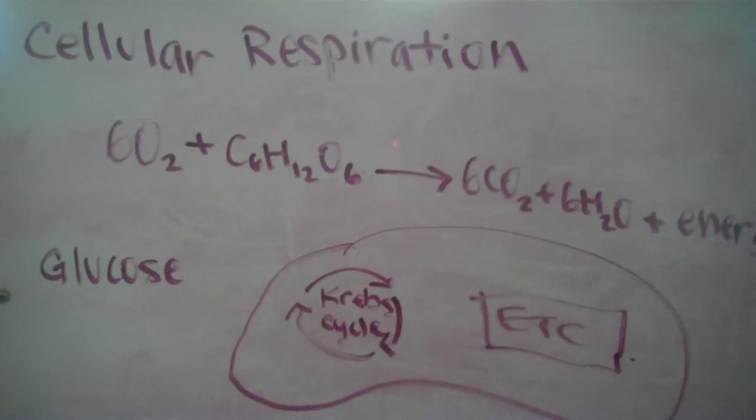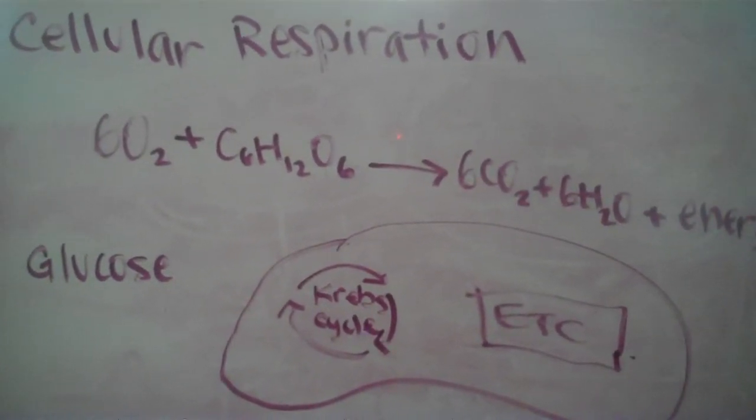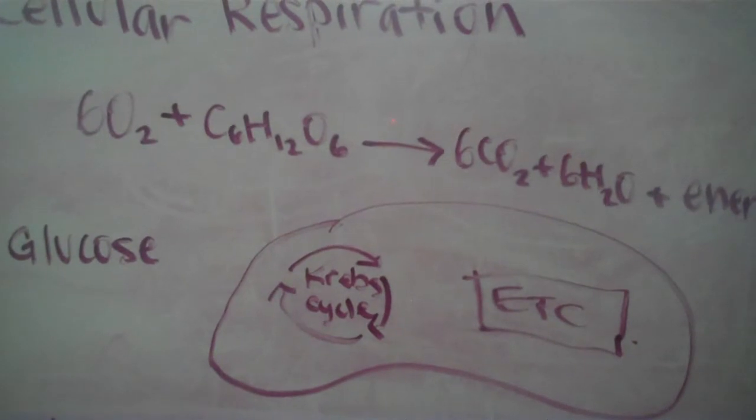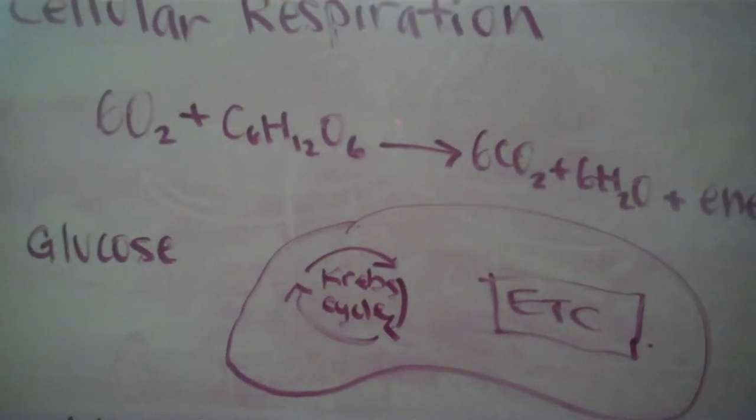Oxygen gets into the cells of an animal through the lungs and then diffusing through the cells. Glucose gets into the cells when the animal eats food.